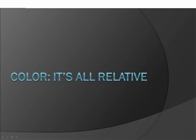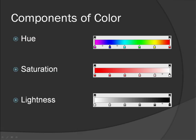Color. It's all relative. Part 7: LAB and back again. We know that color can be separated into three components: hue, saturation, and lightness.